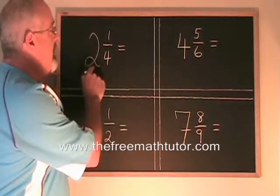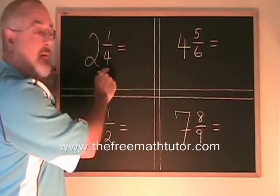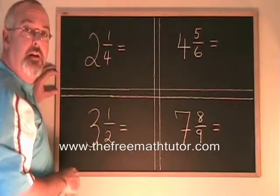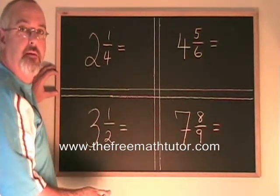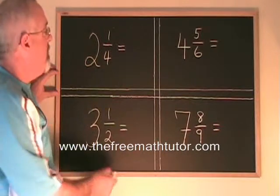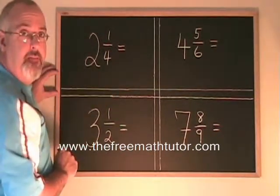The big number times the denominator plus the numerator gives the new numerator. The new denominator is the same as the old one. Let's try it.